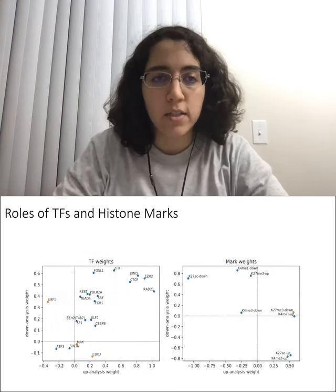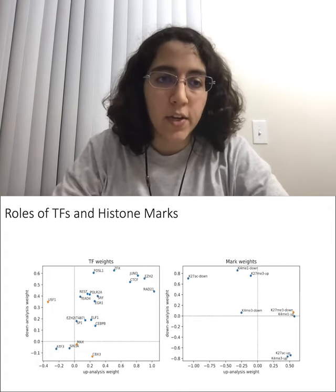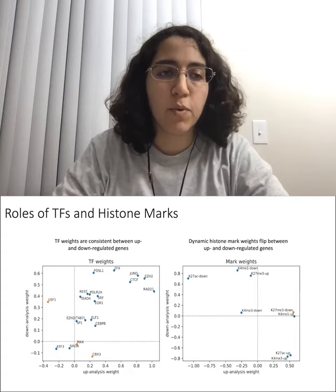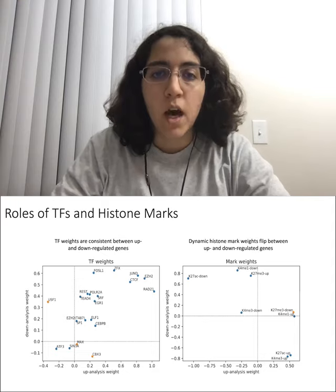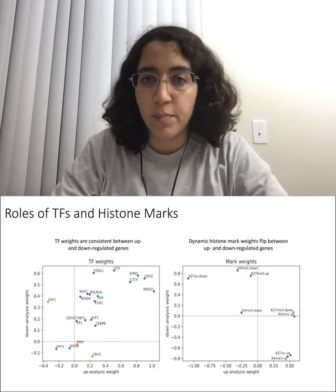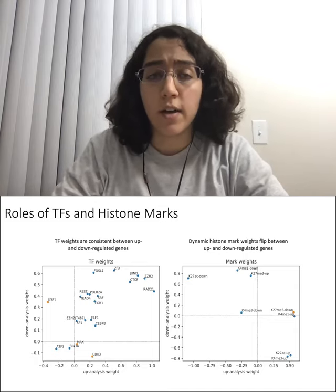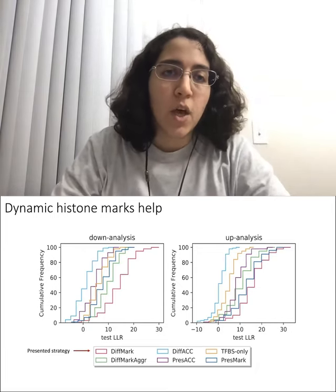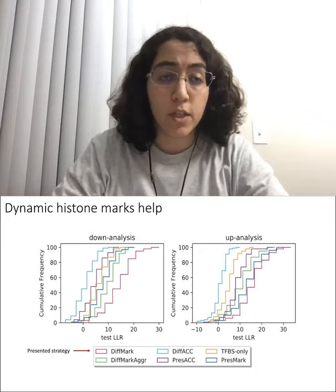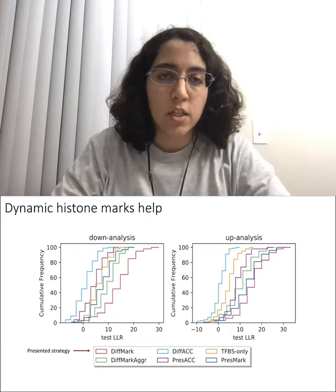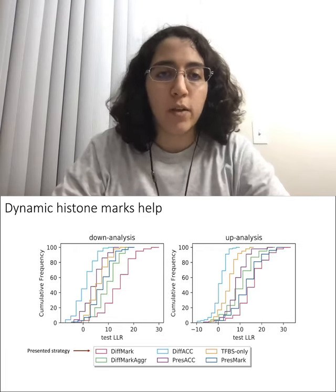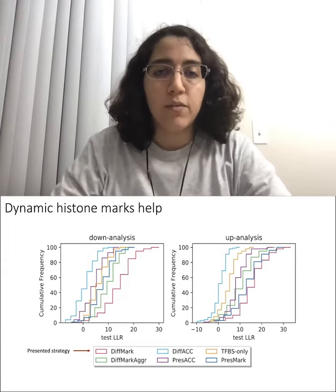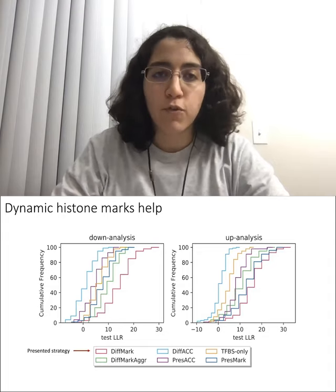As mentioned earlier, our simpler model assigns weights to TFs and marks. The TF weights learned by the model are consistent between the analyses for down-regulated and up-regulated genes. On the other hand, the dynamic histone mark weights flip between up-regulated and down-regulated analysis, which is expected. We also tested alternative strategies defining regulatory evidence differently — for example, taking only the presence of TF binding sites — and observed that all alternative strategies performed worse than our main strategy.